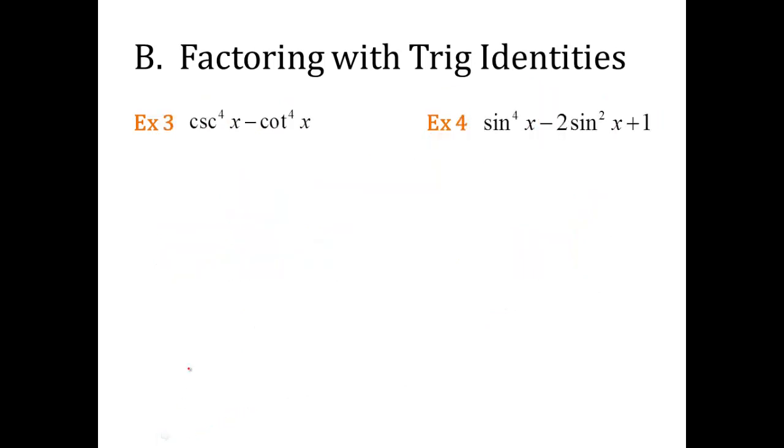Let's try another one. Two terms separated by a minus sign. Check to see if they are perfect squares. Is 4 a perfect square? Yes. So cosecant to the fourth power is the same as cosecant squared times cosecant squared. I hope you realize that. Cotangent to the fourth is the same as cotangent squared times cotangent squared. So this again is another difference of squares. So what I'm going to do is factor it. Cosecant squared of x minus cotangent squared of x, cosecant squared of x plus cotangent squared of x. Difference of squares again.